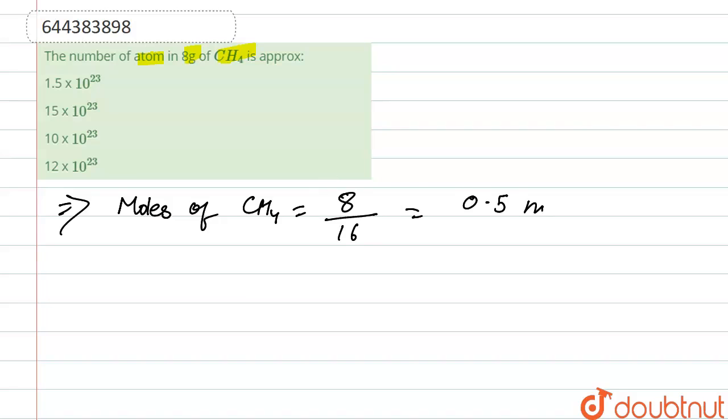So it is 0.5 mole. Now we calculate the number of molecules. Number of molecules will be 0.5 into 6.02 into 10 to the power 23 molecules.